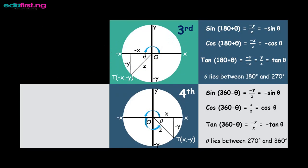For the third quadrant, the opposite is minus y, the adjacent is minus x, and the hypotenuse is z. Our angles are now expressed as 180 plus theta, because the angles stretch into the third quadrant. Sine becomes minus y over z, which gives us minus sine theta. Cos becomes minus x over z, giving us minus cos theta. Tan becomes minus y over minus x, which simplifies to y over x — the negatives cancel — giving us positive tan theta.